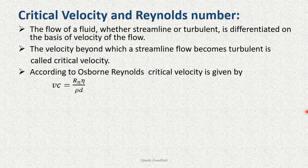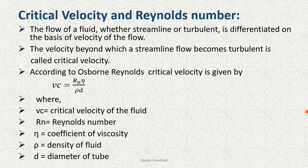According to Reynolds, critical velocity is given by vc = Rn·η/(ρ·d), where vc is the critical velocity of the fluid, Rn is Reynolds number, η is the coefficient of viscosity, ρ is the density of the fluid, and d is the diameter of the tube.